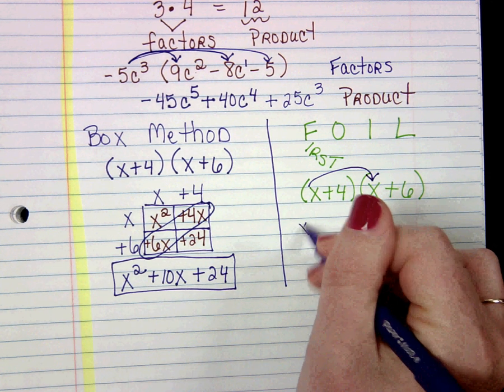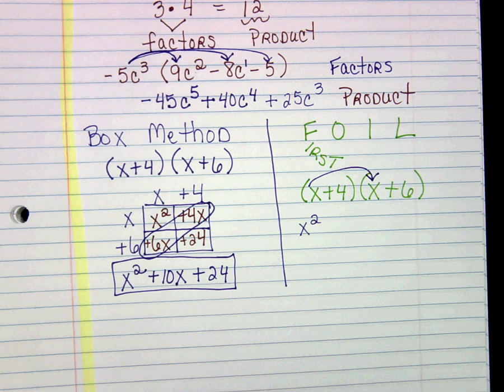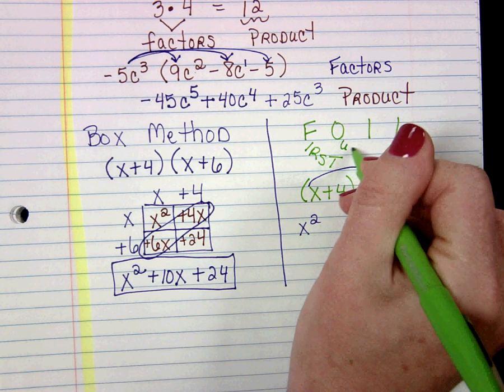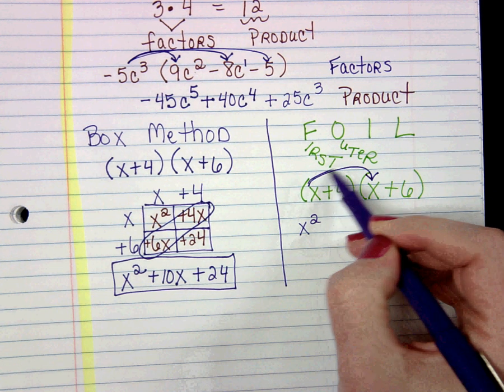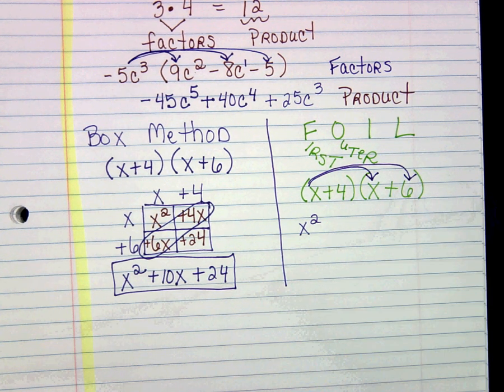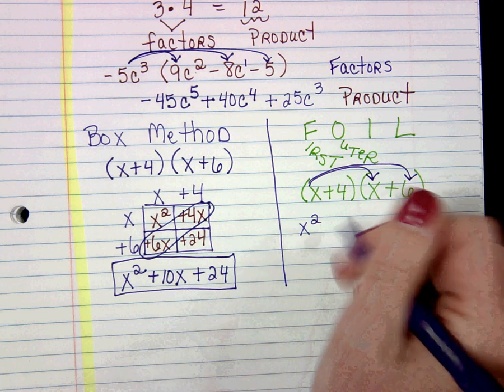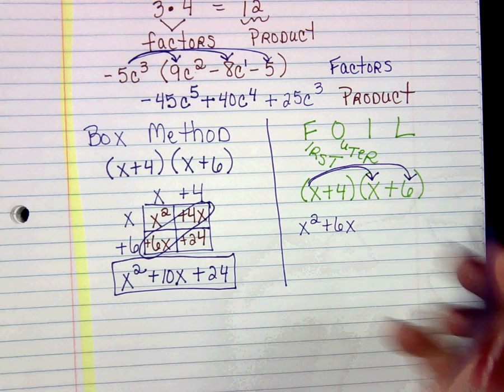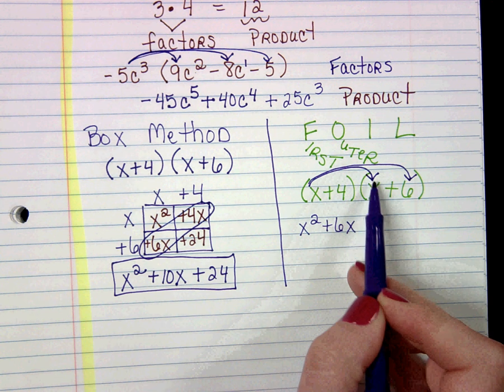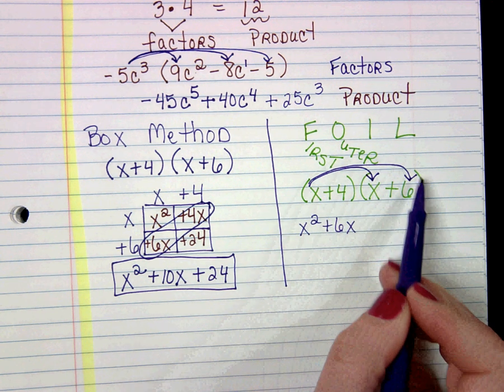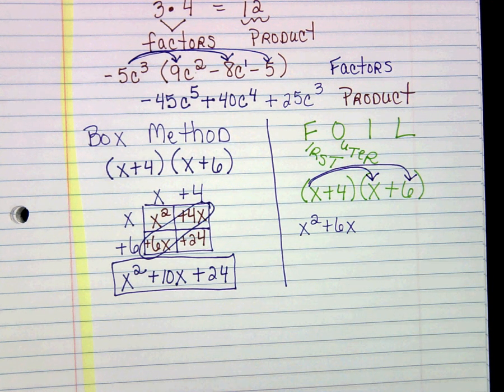Then it tells us to multiply our outer terms together, which would be x and 6, so plus 6x. All we did here is we took the x and we multiplied it by every term in my second binomial. Easy. Some of you might like this method better.